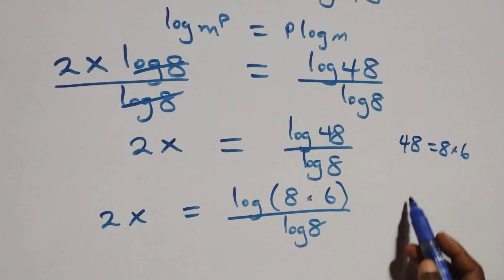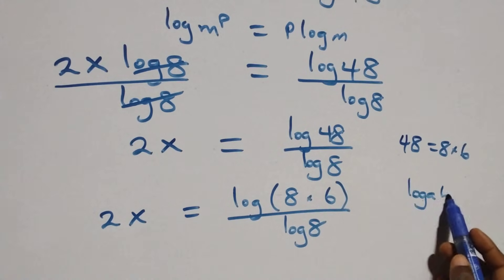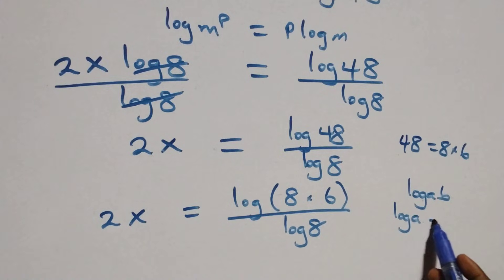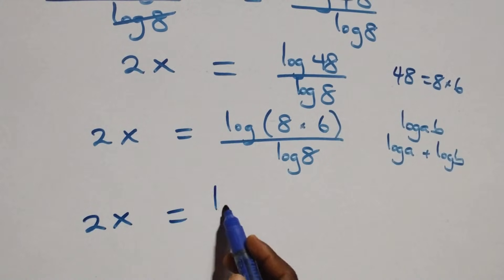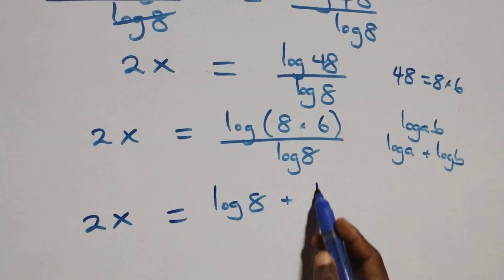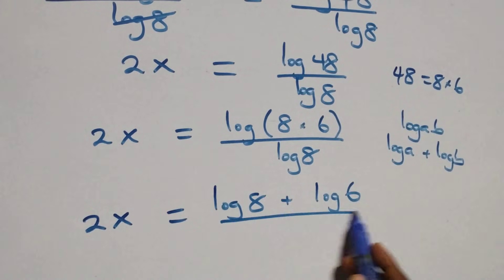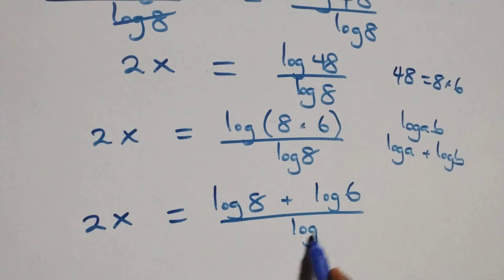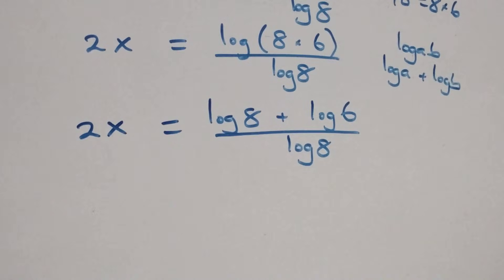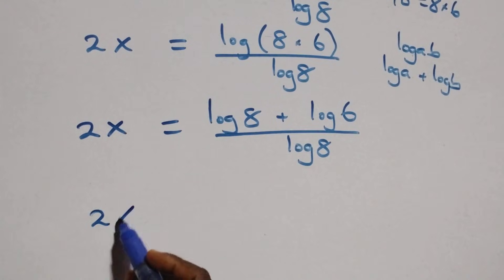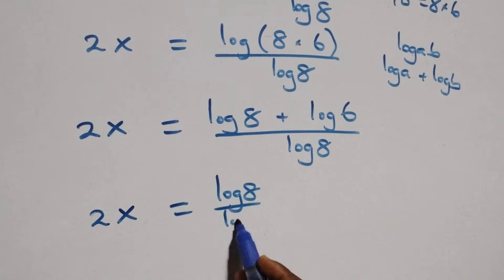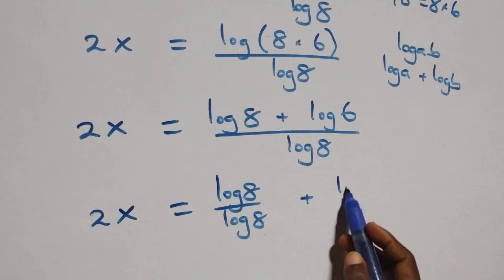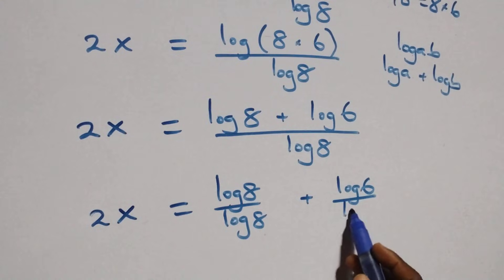This follows the logarithm product rule. We have log of a times b, which is the same thing as log a plus log b. So here we have 2x equals log 8 plus log 6, all over log 8. We then separate this into two fractions: 2x equals log 8 over log 8, plus log 6 over log 8.